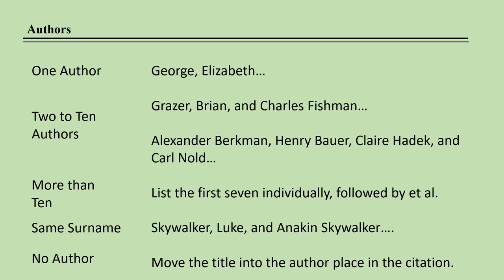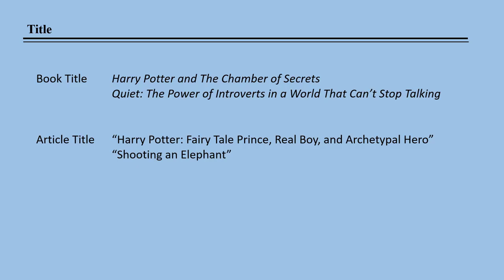If there is no author attributed to the work, begin the citation with the title of the work and alphabetize according to the first full word of the title, leaving off any leading articles such as the, a, or of. Titles are treated the same in the footnote and bibliography: book titles are italicized, while article titles are not italicized but are encased in quotation marks. Subtitles are preceded by a colon, and all major words of the title and subtitle are capitalized.